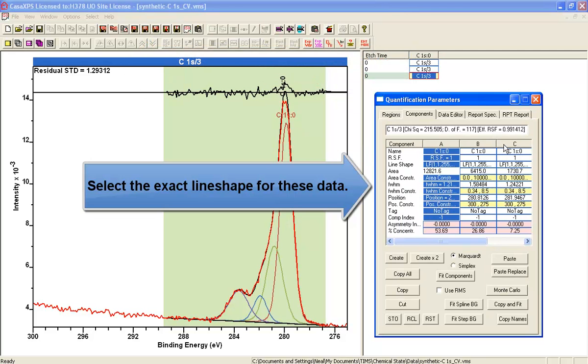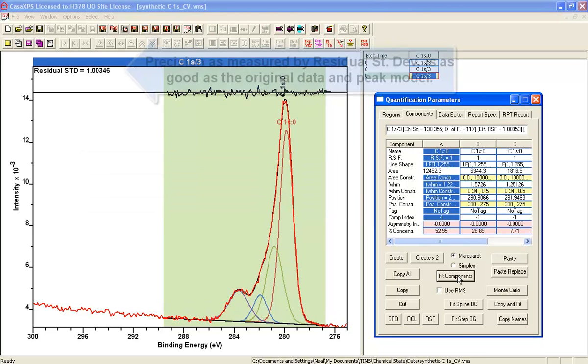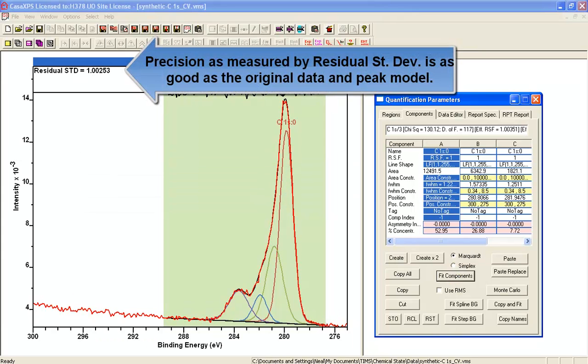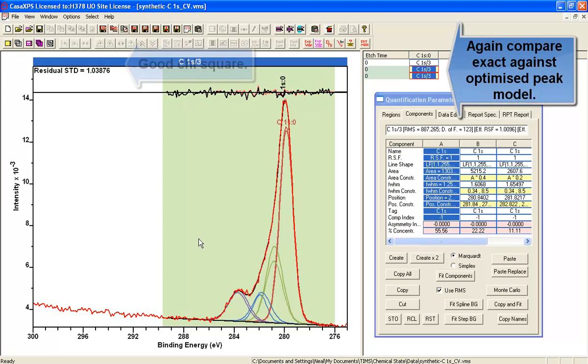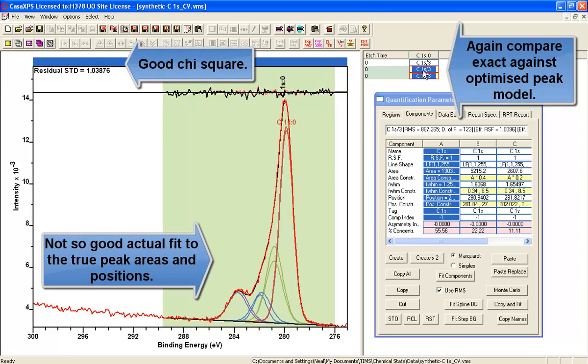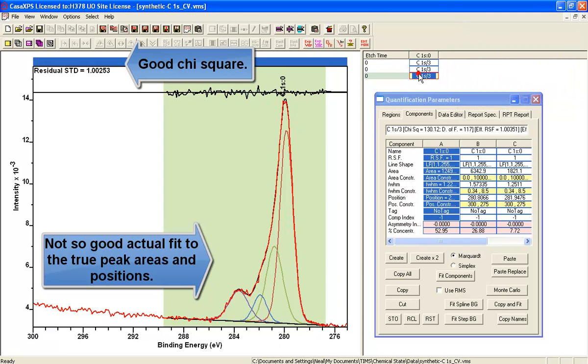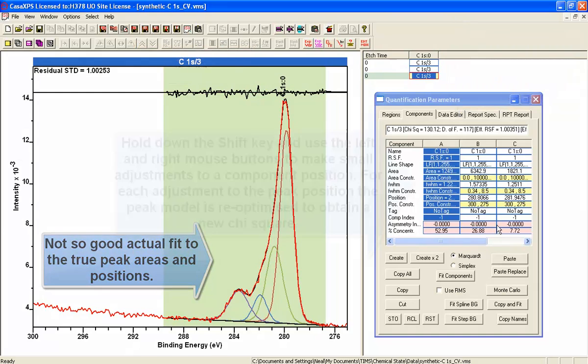So now let's introduce the original line shape and fit again. And now we have good precision. This is not unexpected. So how well did the peak fit do? Again, not particularly well, even though the residual standard deviation suggests that we really have done quite a good job.